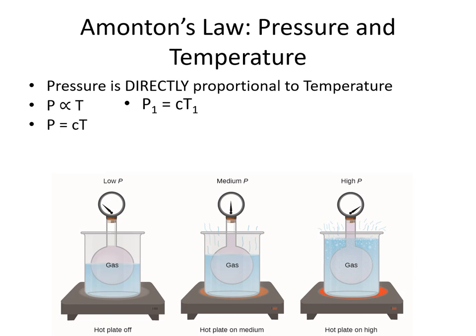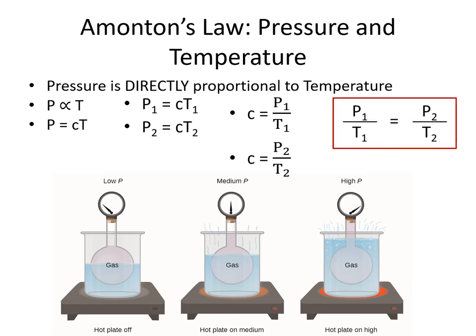This is true in a variety of circumstances. In circumstance one, P1 equals constant times T1; in circumstance two, P2 equals constant times T2. We can rearrange those equations to solve for the constant by dividing both sides by temperature, giving us constant equals P1/T1 and constant equals P2/T2. Since it's the same constant in both cases, we set them equal: P1/T1 = P2/T2. This before-and-after form of the equation is what we're most likely to use.